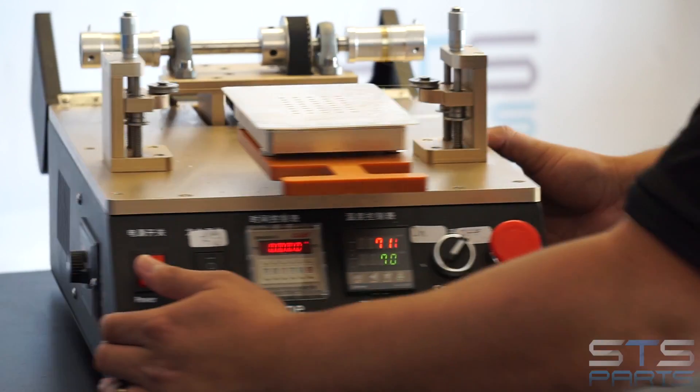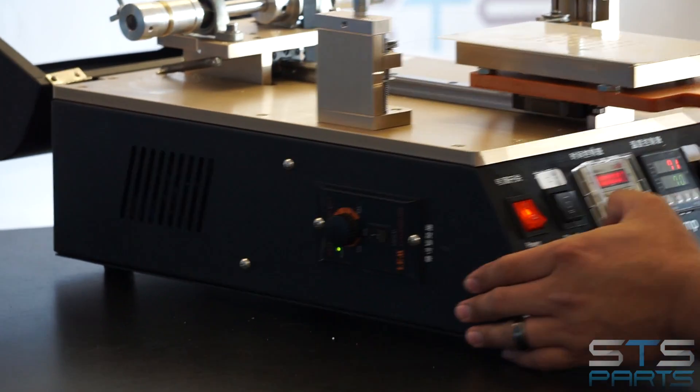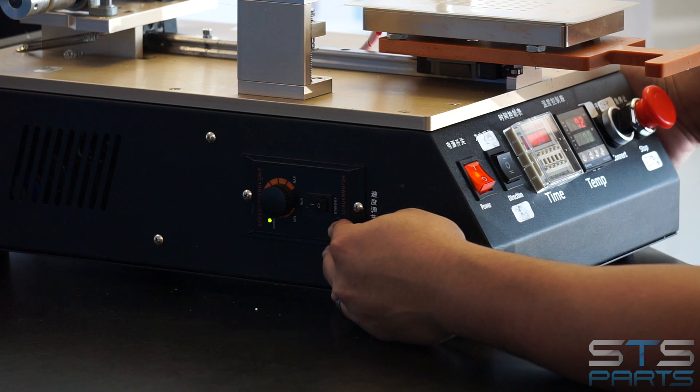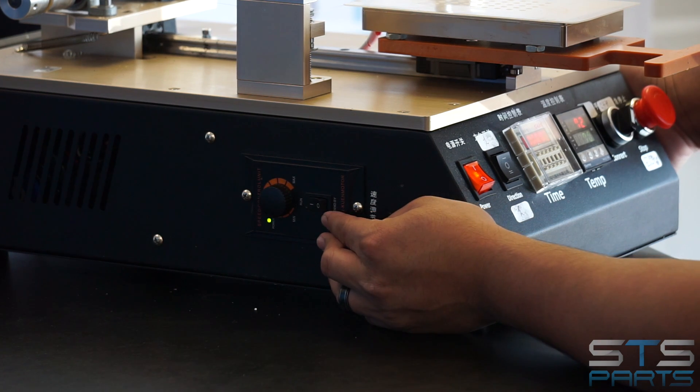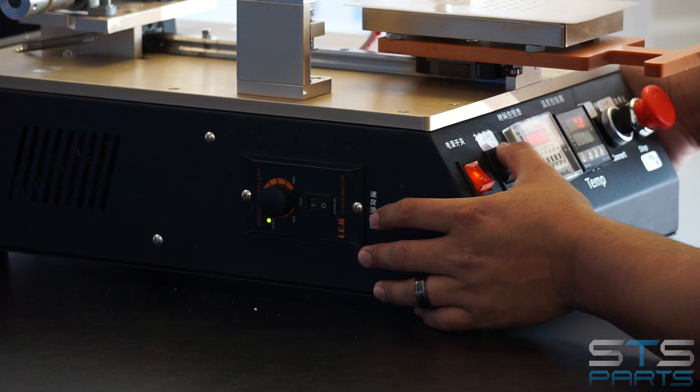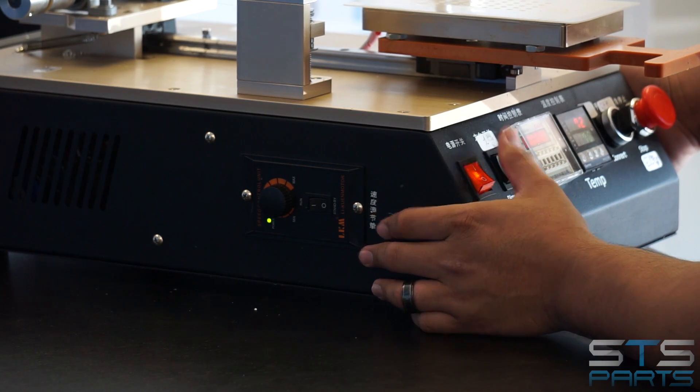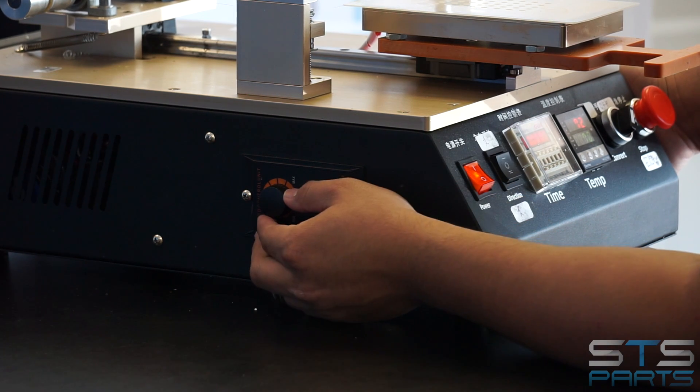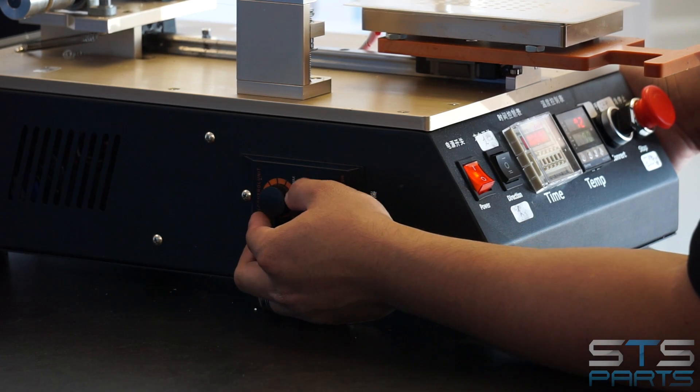And then on the other side, it has a control for your motor, how fast you want it to be, and it also has a switch for it. So, if you were to turn this off and you want it to go to any direction, it will not spin. So, you have to have this on in order for that motor to work. And then you can set the speed at your convenience.